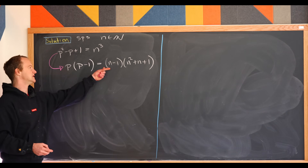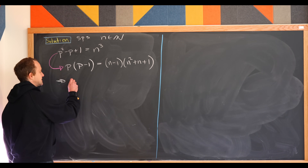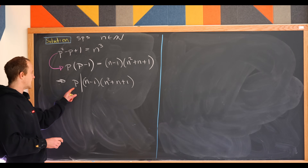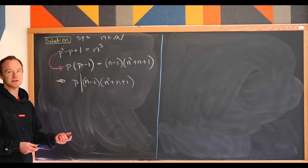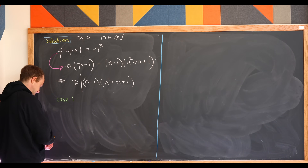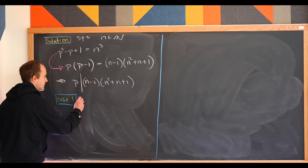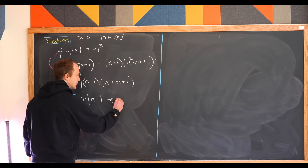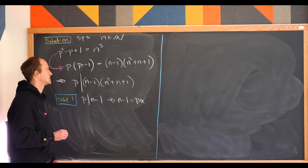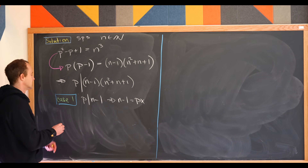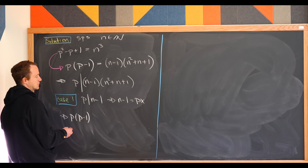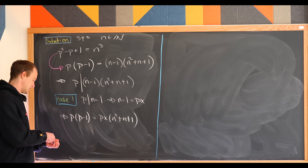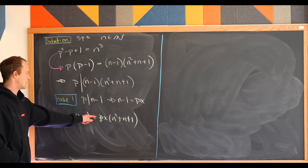The left hand side is a multiple of p, which means the right hand side is also a multiple of p. So p divides (n minus 1)(n squared plus n plus 1). Since p divides a product of two things, it must divide one of them. Let's say our first case is when p divides (n minus 1). If p divides (n minus 1), we have n minus 1 equals p·x. Rolling that back into our equation, we have p(p minus 1) equals p·x·(n squared plus n plus 1), and we can cancel the p's to get p minus 1 equals x·(n squared plus n plus 1).